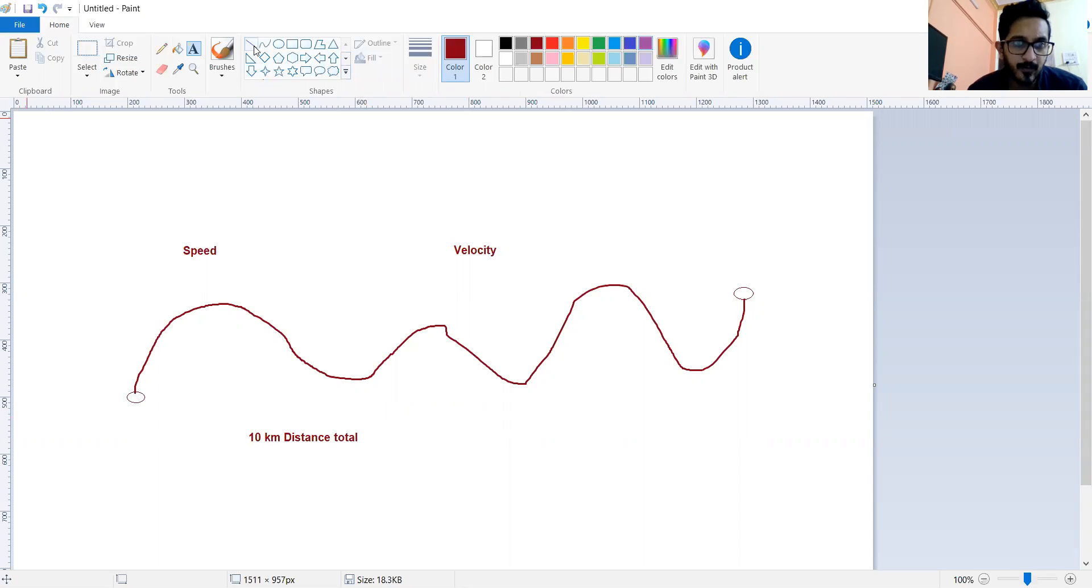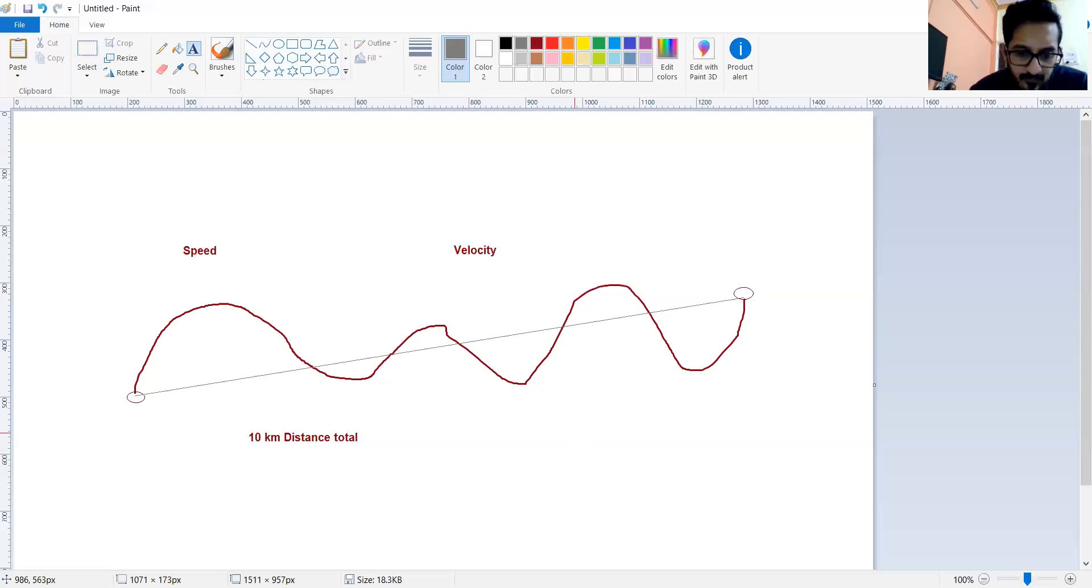Suppose the shortest distance between them, the shortest distance between them is, say, 7 km. Fine.